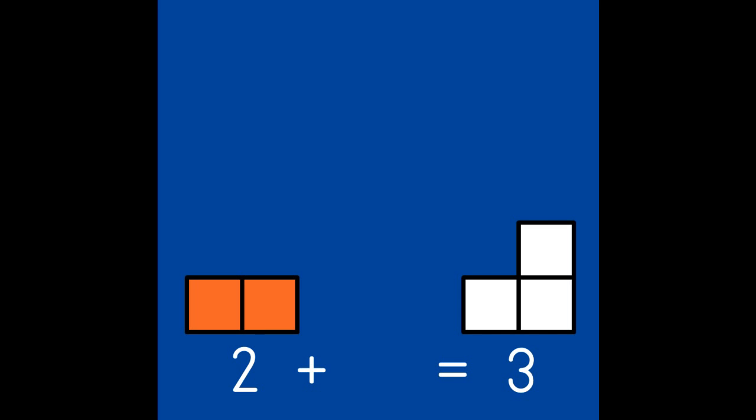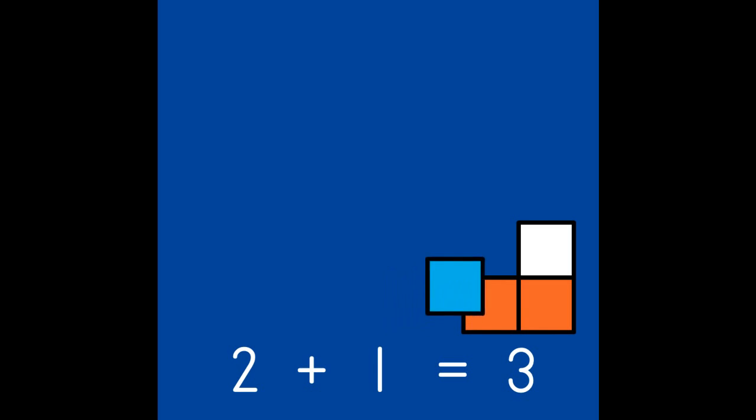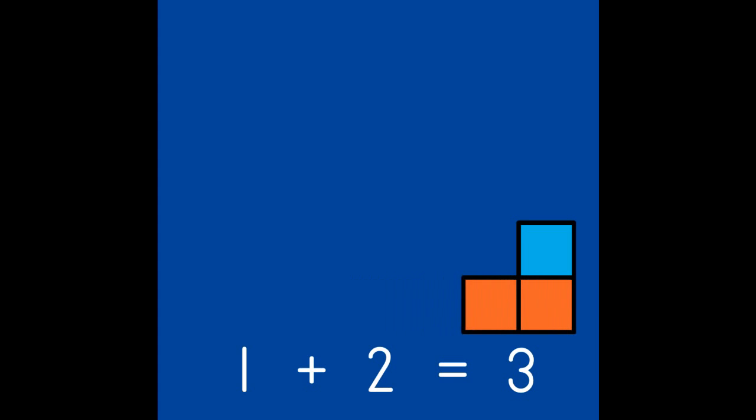In this video, we will learn to combine partners to make the number 3. Combine means to put the two partners together to make 3. We will use a white 3 pattern as a puzzle to fill with our partners. This helps us see how the partners work together to make 3. Let's put the number 2 in our puzzle. We can see that 2 needs 1 to make 3, because 2 and 1 are partners of 3. If we switch the partners and put the 1 in the puzzle first, we can see that we need 2, because 1 and 2 together are the same as 3.